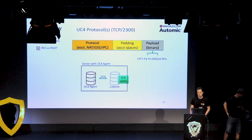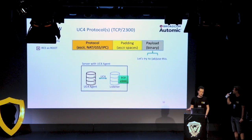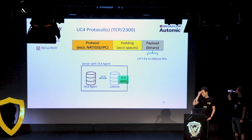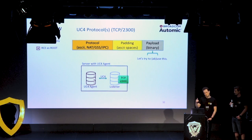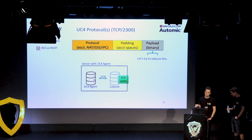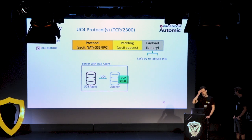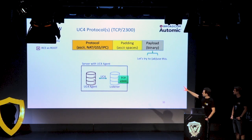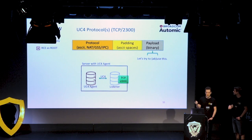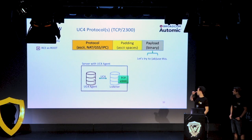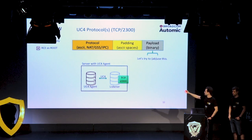We got RCE as nobody, but we want RCE as root. The UC4 agent itself runs as root — the only way to get root privileges is to talk to the agent process itself. We also looked at NAT and GSS messages, and both had problems in their handlers with additional vulnerabilities. Now, to target the root agent process, we need to be a little smarter and look into the payload.